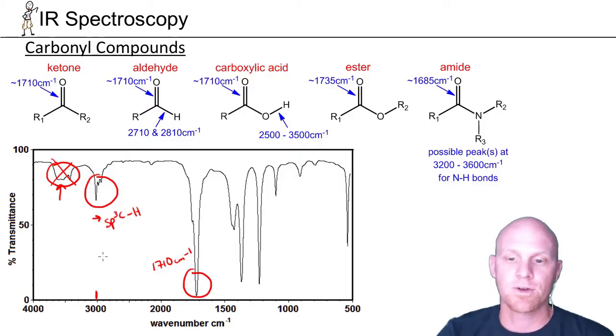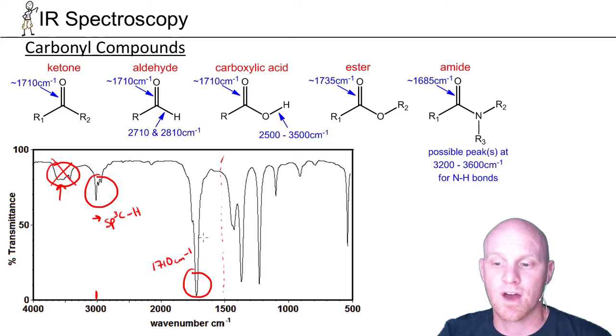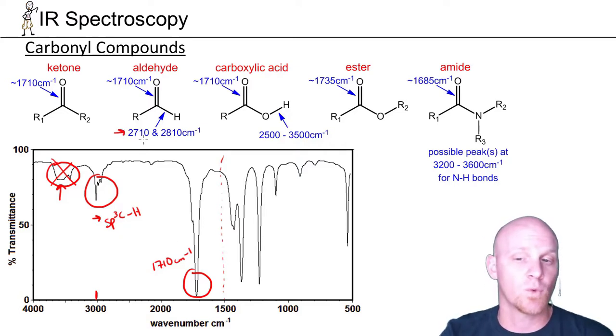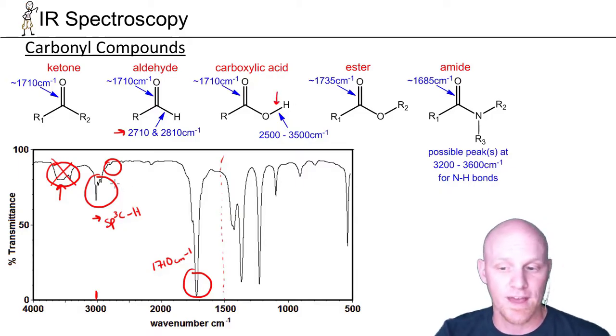After you start looking at what an OH absorption would look like or an NH absorption would look like, you realize that's probably not that. This is the only signals outside the fingerprint region. Everything else is to the right of the fingerprint region. We can now say it's not an aldehyde because there's not these two peaks at 2710 and 2810. We also see there's no big huge peak from 2500 to 3500, so it's also not a carboxylic acid.